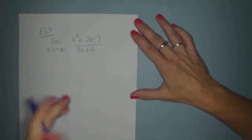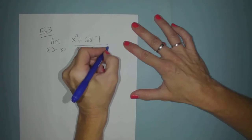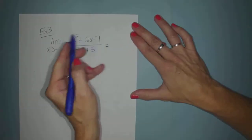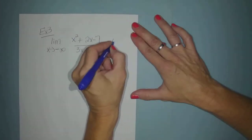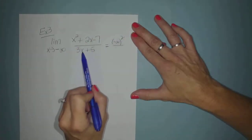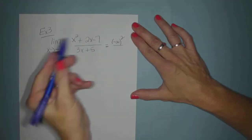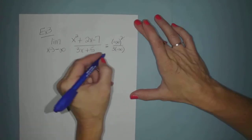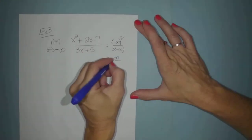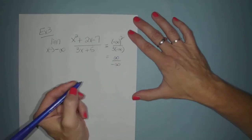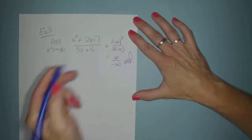So let's go ahead and plug negative infinity in. By principle of dominance, my term of highest power here is x squared. So I'm just going to plug negative infinity squared divided by my highest power here is 3x, so 3 times negative infinity. And this gives me positive infinity because when I square, that turns positive over negative infinity. And this most certainly is undefined.